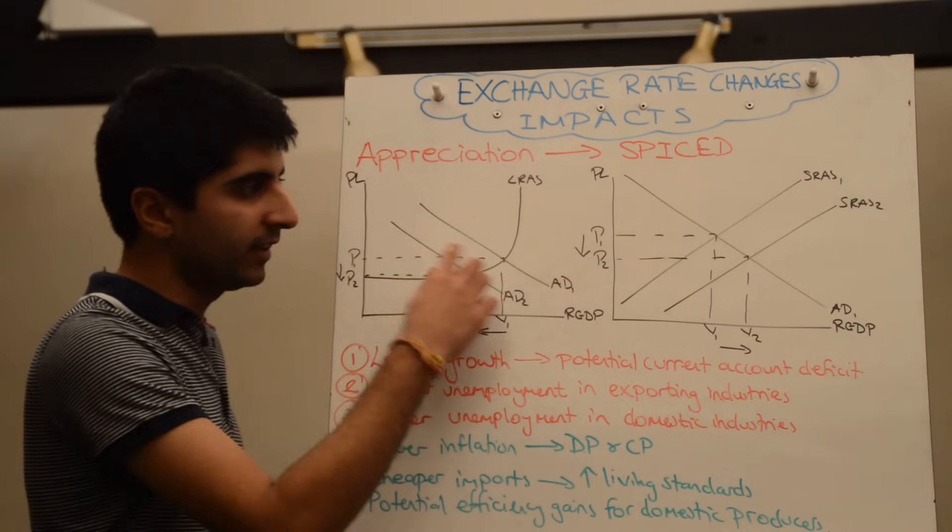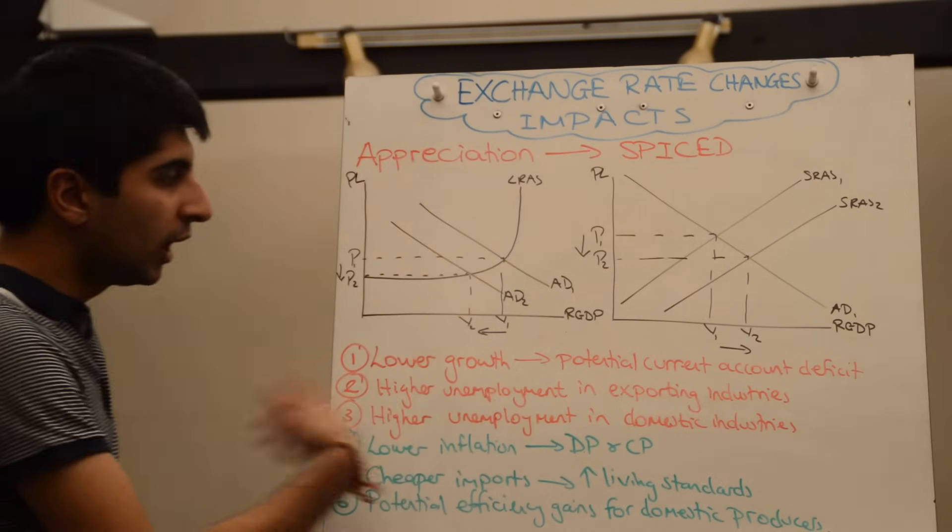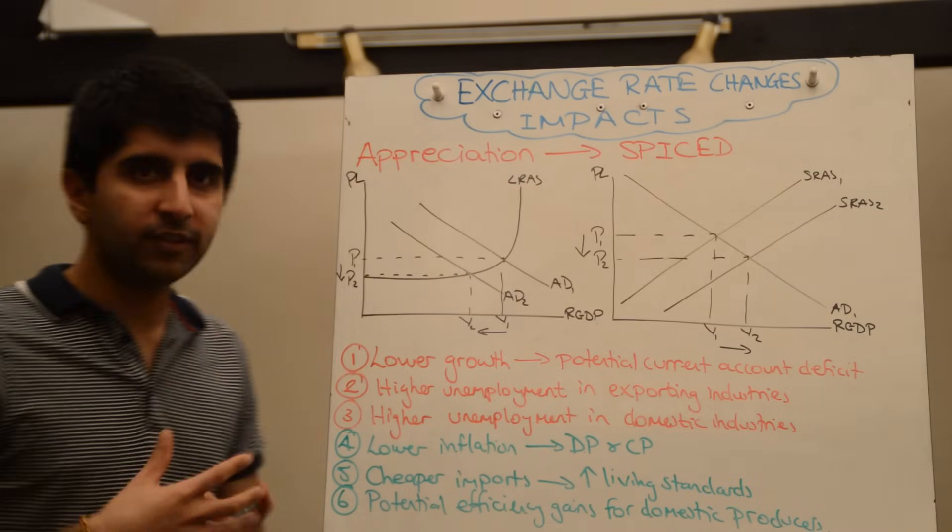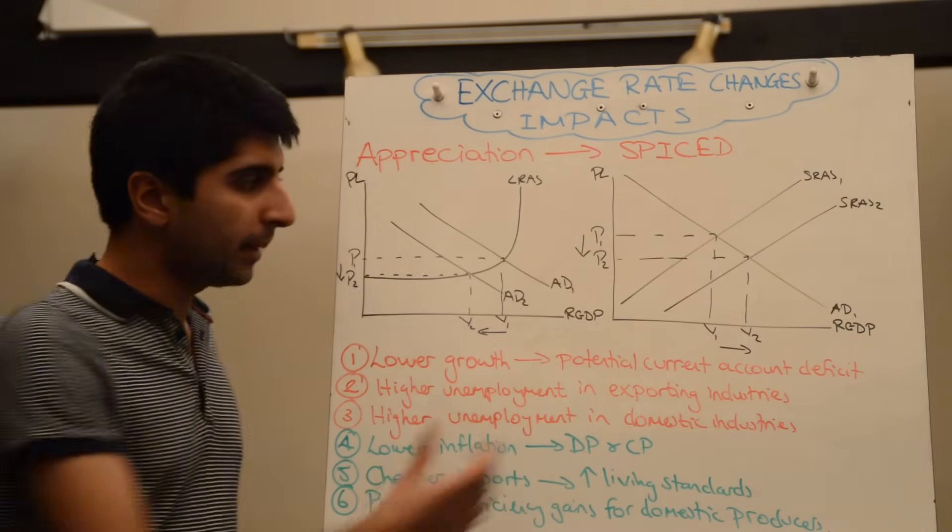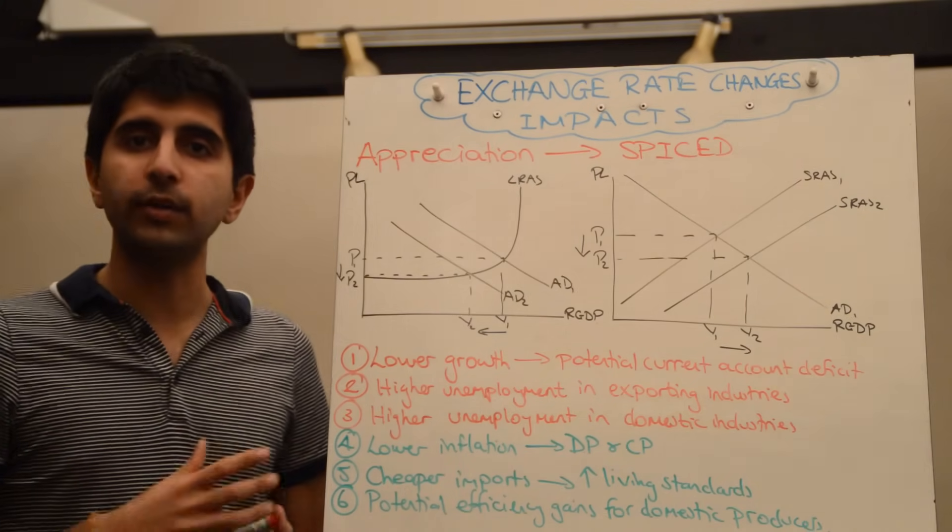Lower growth - you can see here this diagram pretty much dominates when we look at growth. Lower growth stems from that, exports falling. It stems from the fact that the current account position is likely to worsen, maybe go into deficit.